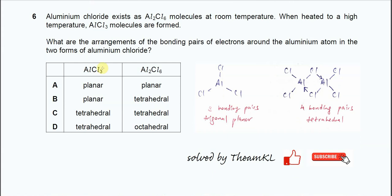Question 6. Aluminum chloride can be Al2Cl6 at room temperature. When it gets heated, it will form AlCl3. So, the question is, what are the arrangement of bonding pair of electrons around the aluminum atom in the two forms of aluminum chloride?